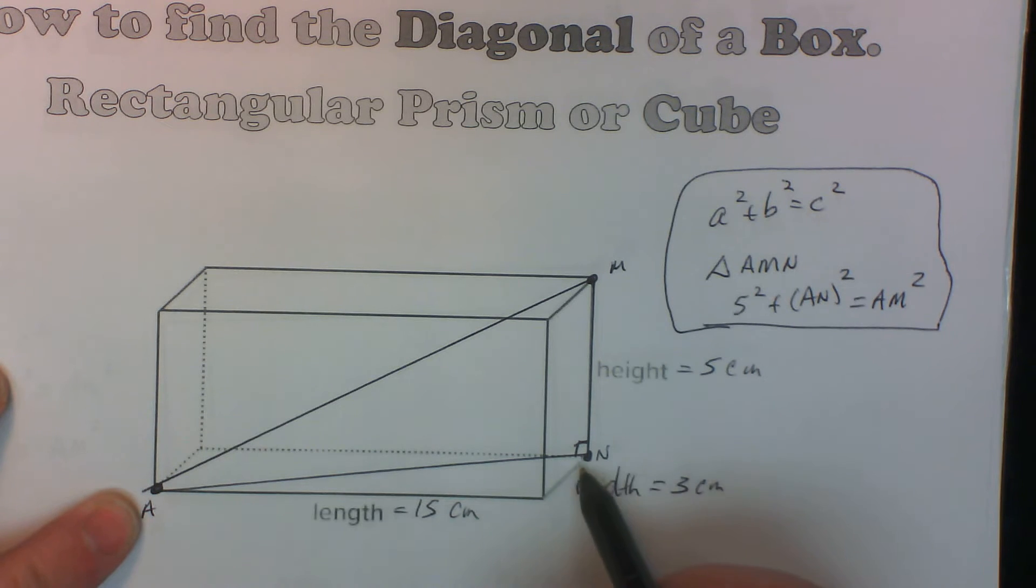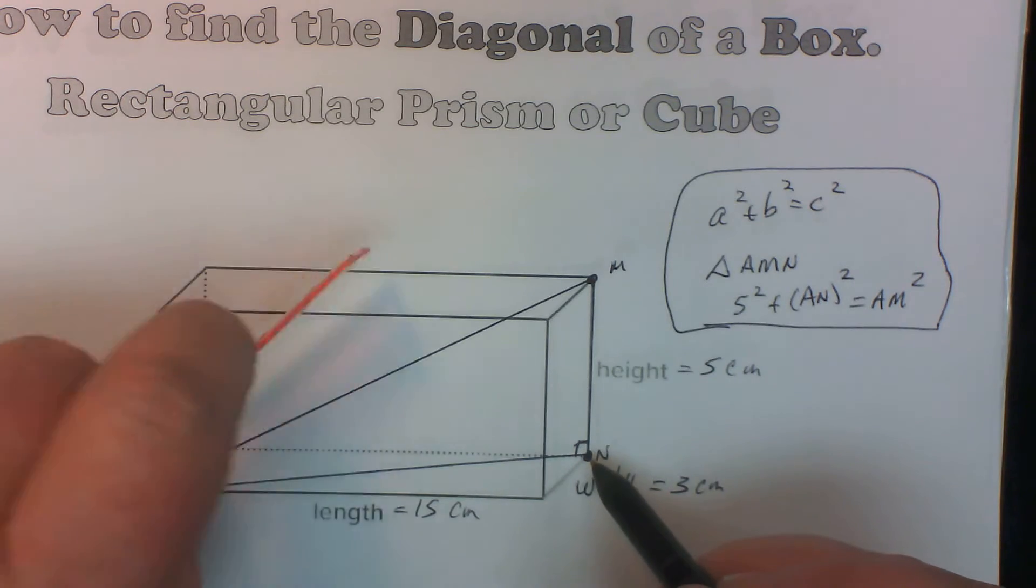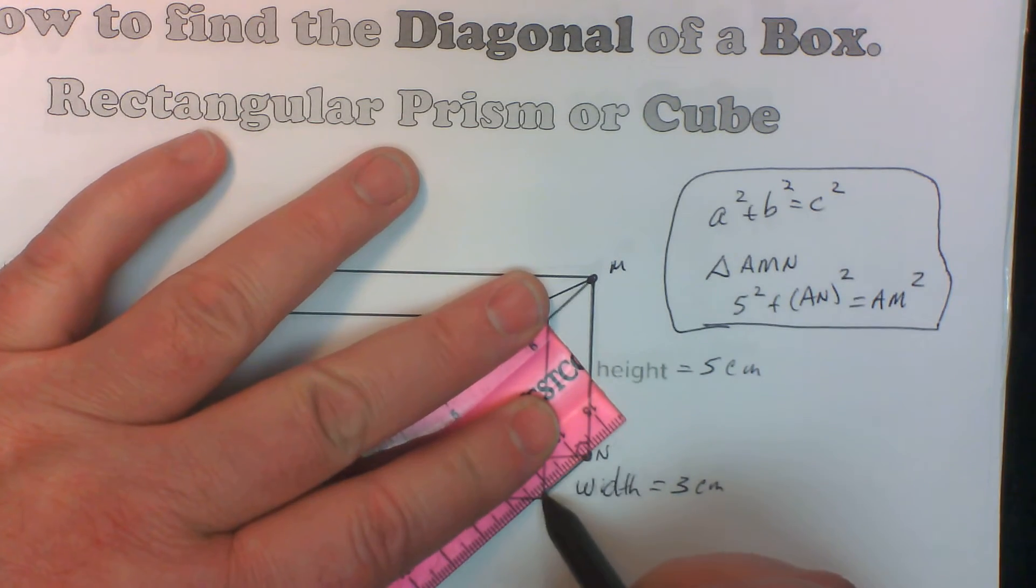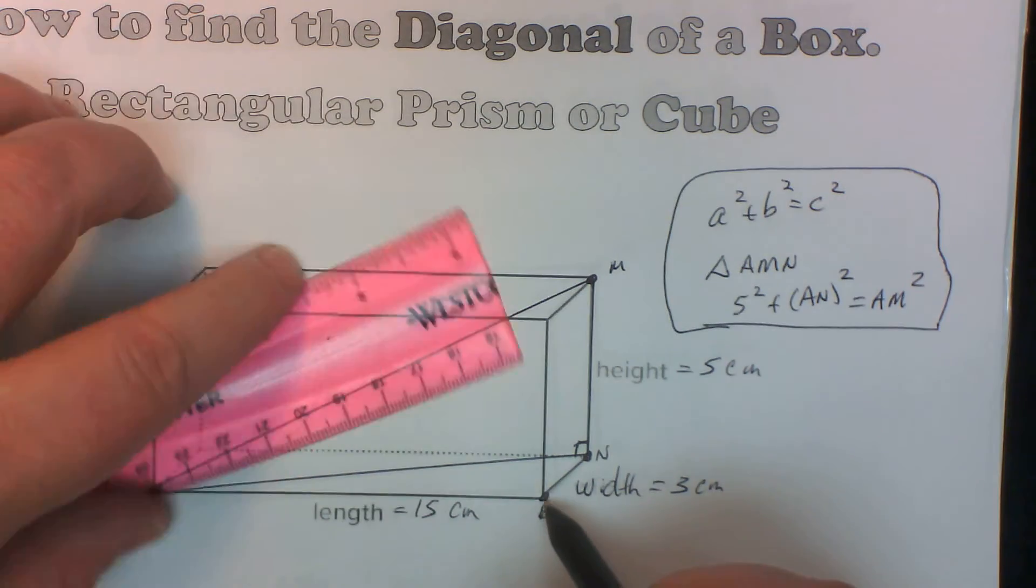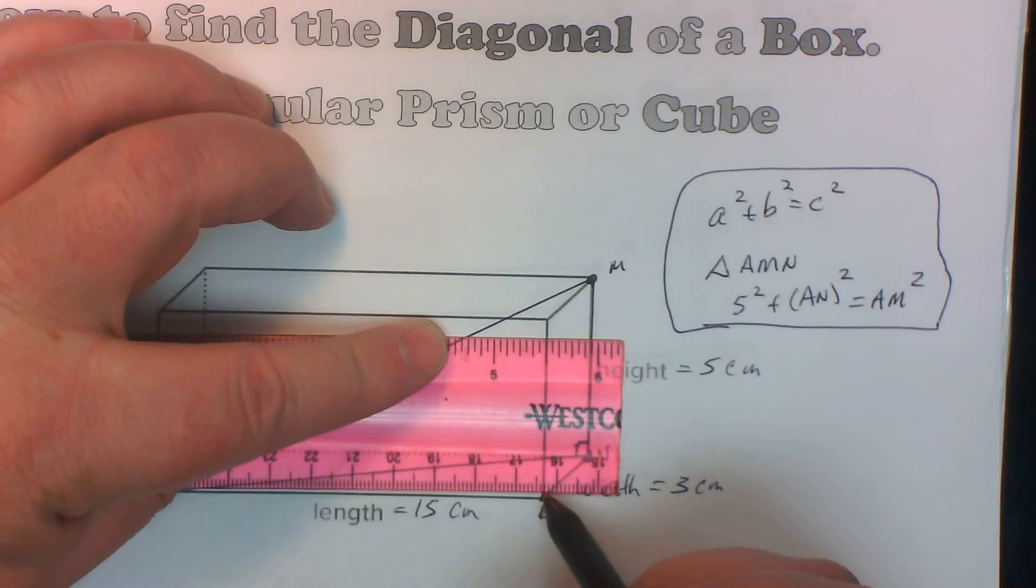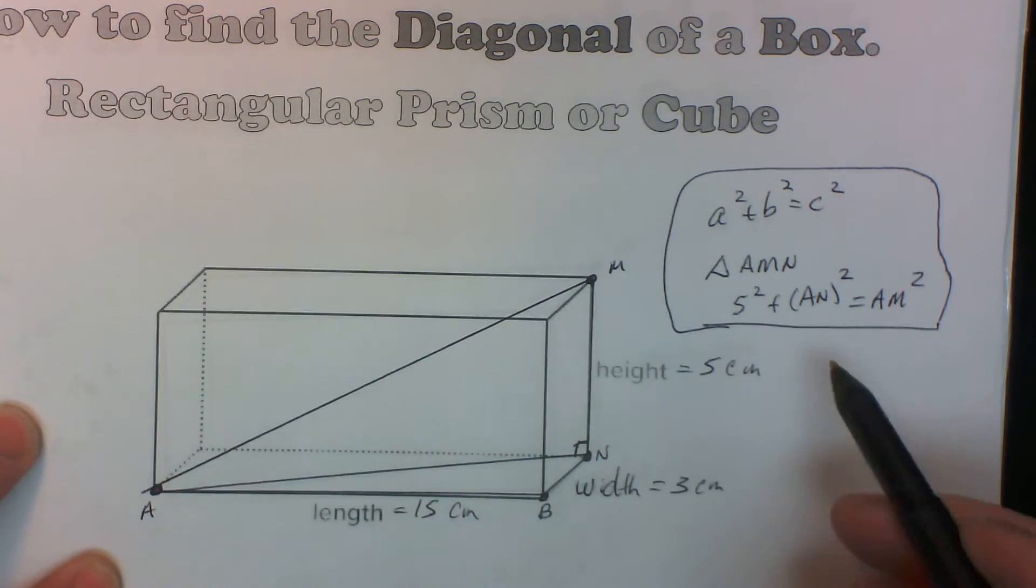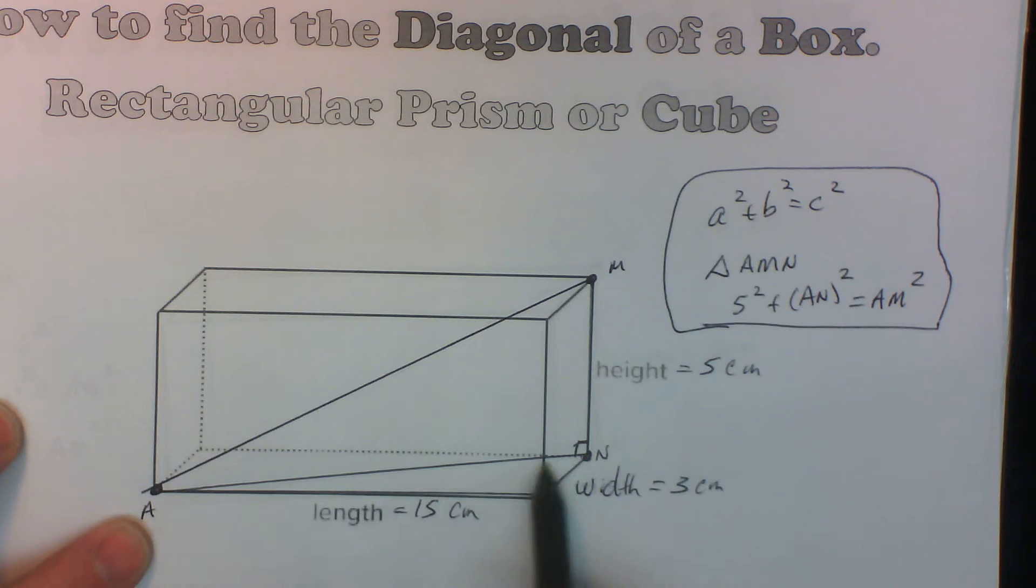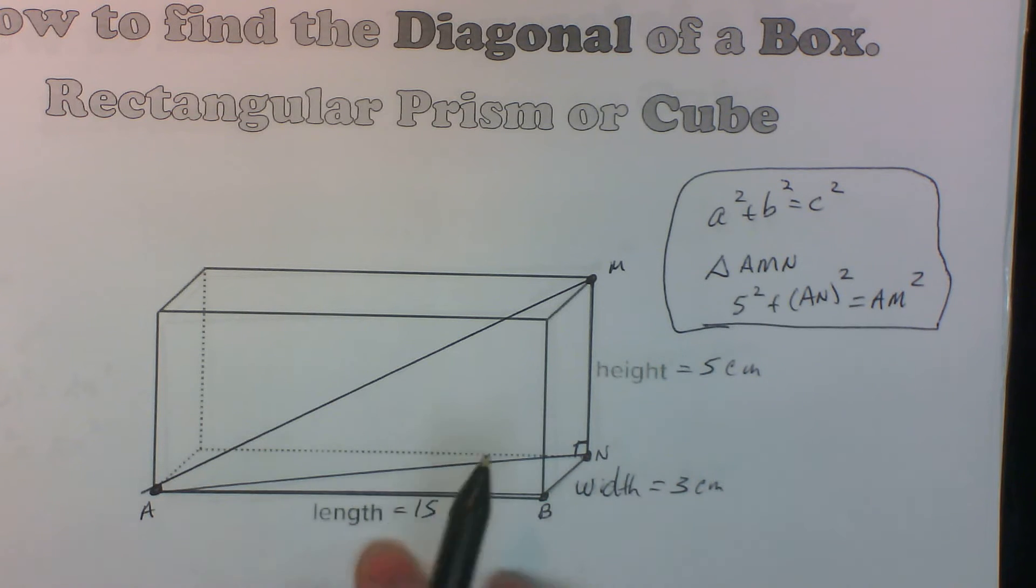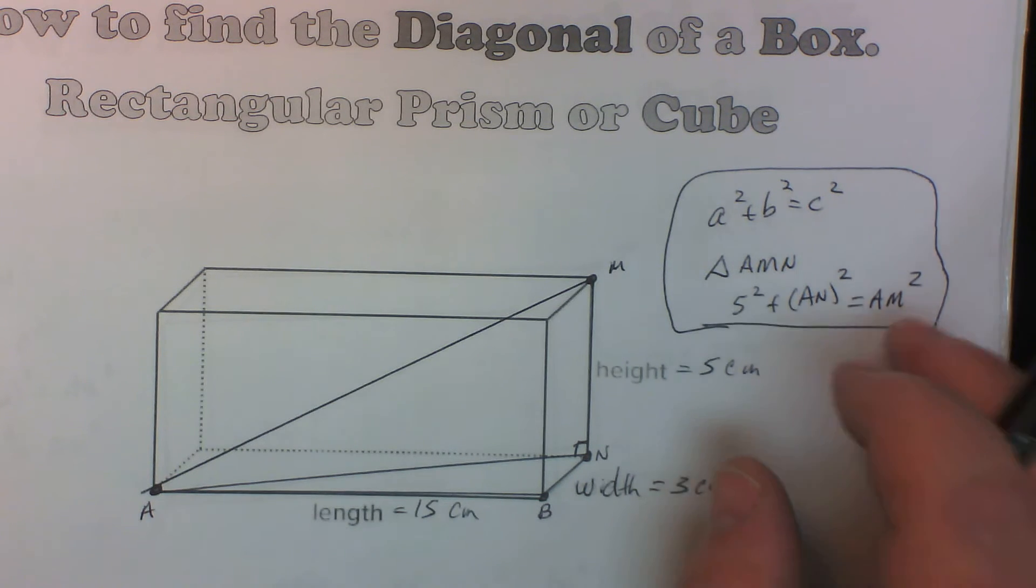Now, when you look at AN, if you look at it, AN is the hypotenuse of the triangle that's on the base. So we can call this point B. So if you look at this triangle that's on the base right here, the length we need, AN, is the hypotenuse of the triangle A, B, N. So we're going to figure out that first, and we're going to plug it in, and then we're going to figure this out.